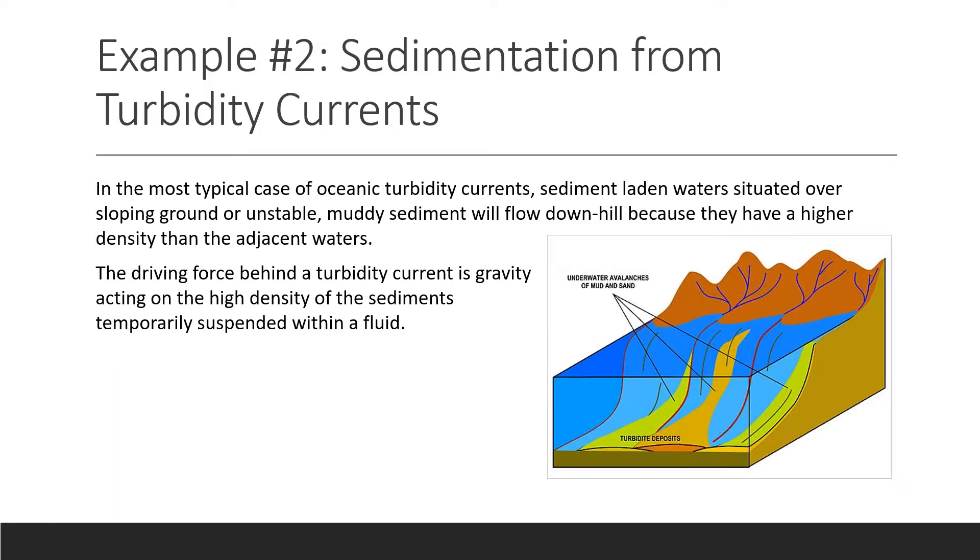Once an oceanic turbidity current reaches the calmer waters of the flatter area of the abyssal plain, the main oceanic floor, that is, the particles borne by the oceanic current settle out of the water column. The sedimentary deposit of the turbidity current is the turbidite. So as you can see in this illustration, the turbidite is right here.